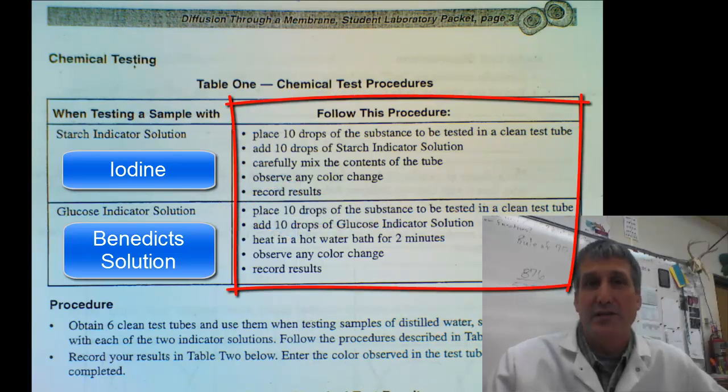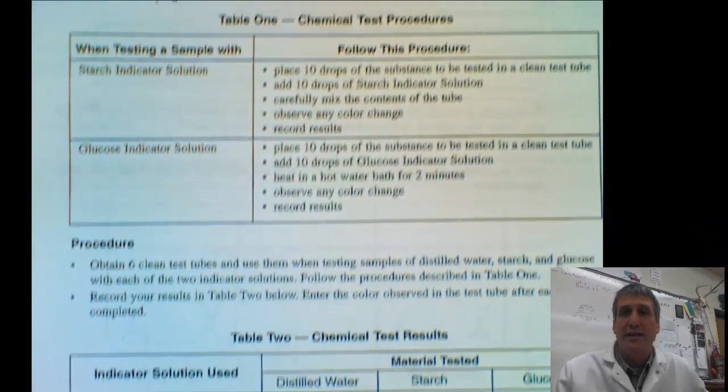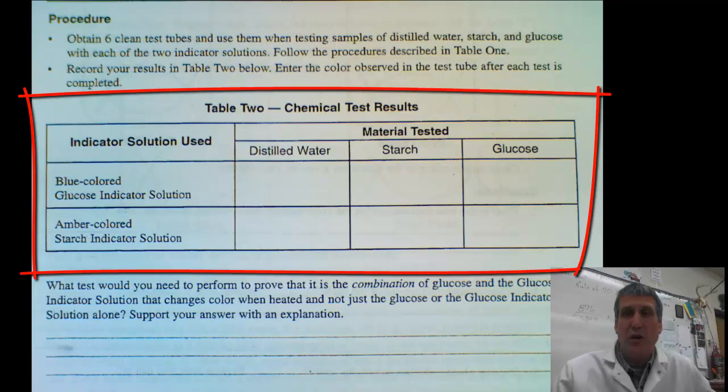You need to read the procedures for the use of each of these indicators. Now we're going to move into the back and fill out table 2, which determines what happens when you use these indicators in distilled water, starch, and glucose.